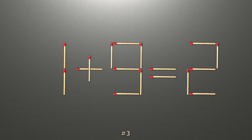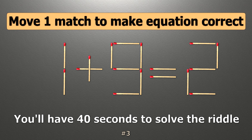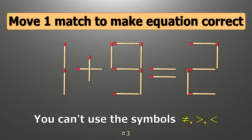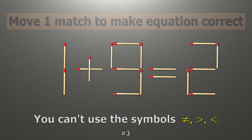We have the equality 1 plus 9 equals 2. Our equality is wrong. We need to move one match to make our equality correct.